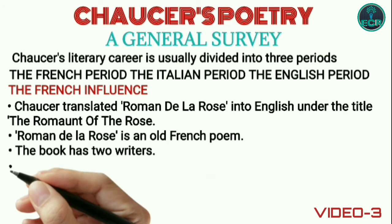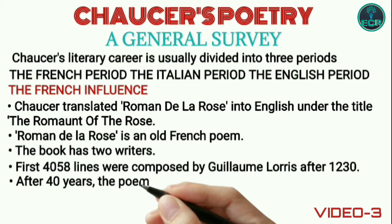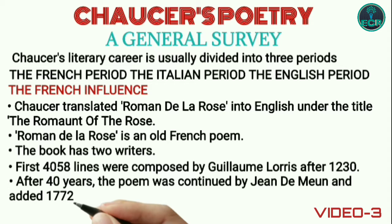The first 4,058 lines were composed by Guillaume de Lorris after 1230. Then, after 40 years, the poem was continued by Jean de Meun, who added 17,724 additional lines.